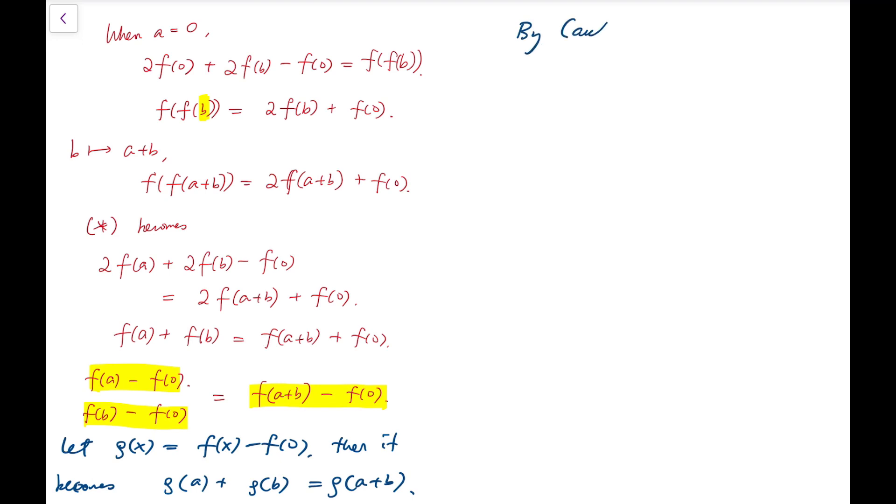Here's where the Cauchy equation comes into play. By the Cauchy equation, I can say that g of x is cx, some constant c. I'm going to rewrite f again, so f of x is now cx plus f of 0.